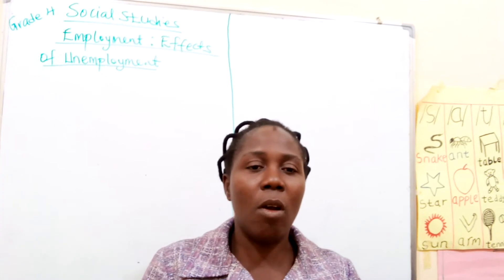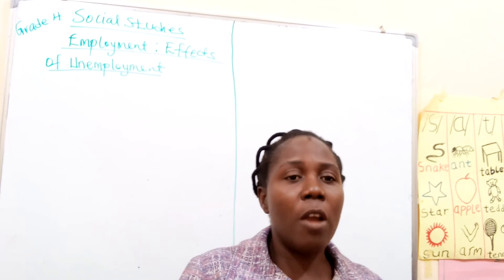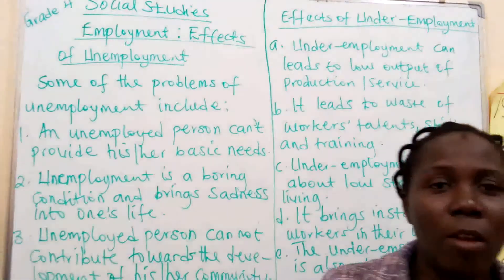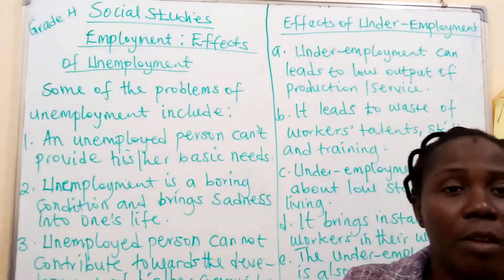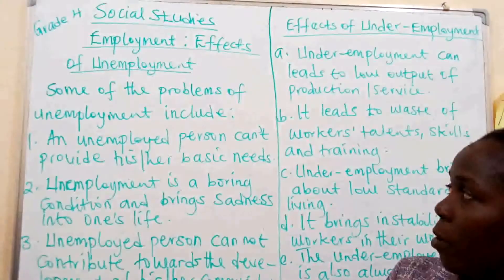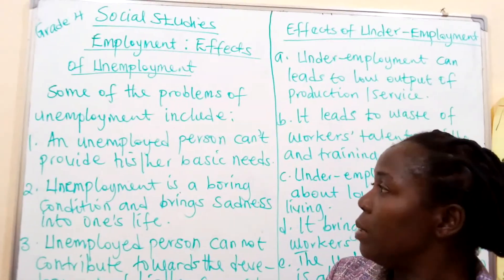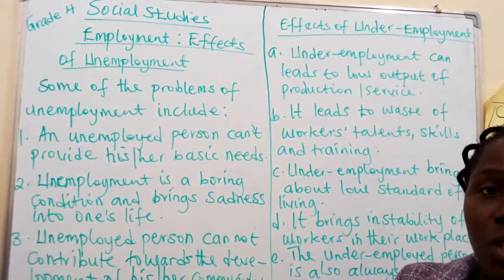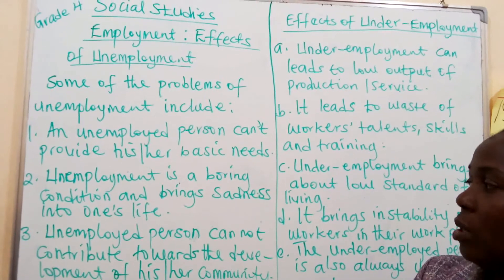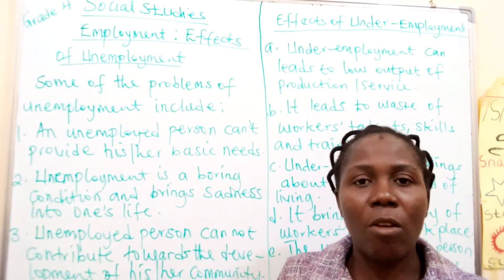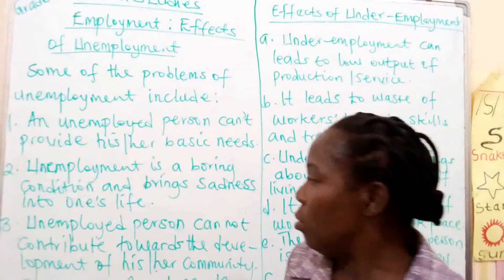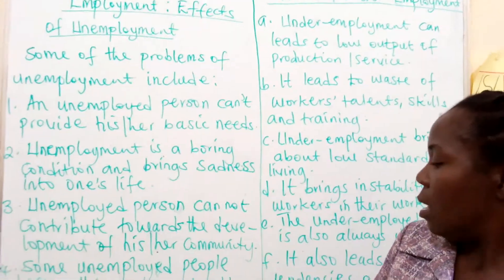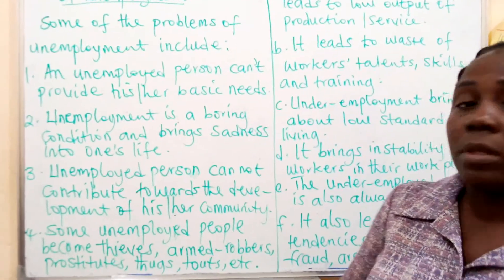So those are the problems of unemployment we have looked at. Here are some of the problems an unemployed person will face: being unable to provide basic needs such as food, clothing, and shelter; unemployment brings boredom and sadness; the person cannot contribute to the development of the community; and some unemployed persons become thieves, armed robbers, prostitutes, drug addicts, and so on.